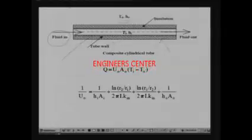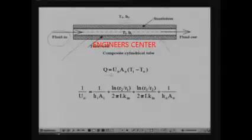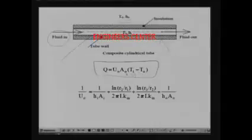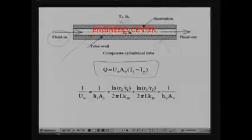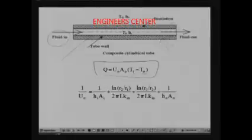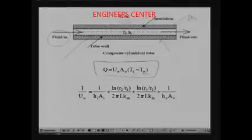An insulated tube through which a fluid is flowing. The fluid temperature is different from the surrounding temperature. The surroundings have a temperature of T_naught, whereas the fluid has a temperature of Ti. There will obviously be heat transfer depending upon whether T_naught is greater than Ti or vice versa — either from the fluid to the outside or from the outside to the fluid. The heat transfer rate Q is equal to U_naught times A_naught times (Ti minus T_naught), where A_naught is the outside surface area of the tube, typically pi times D_naught times L.